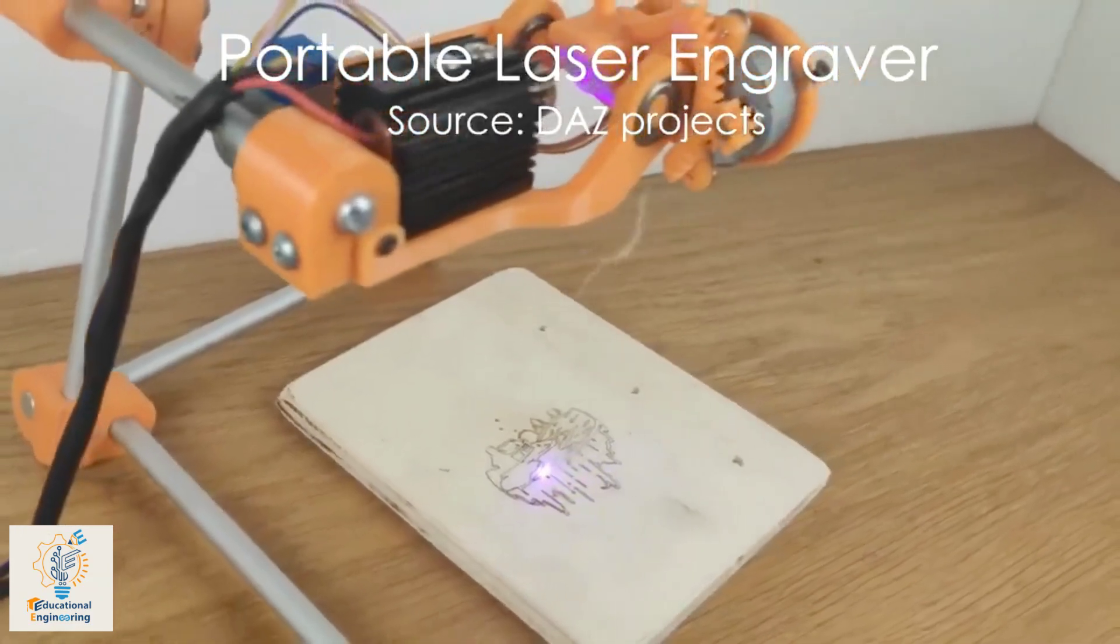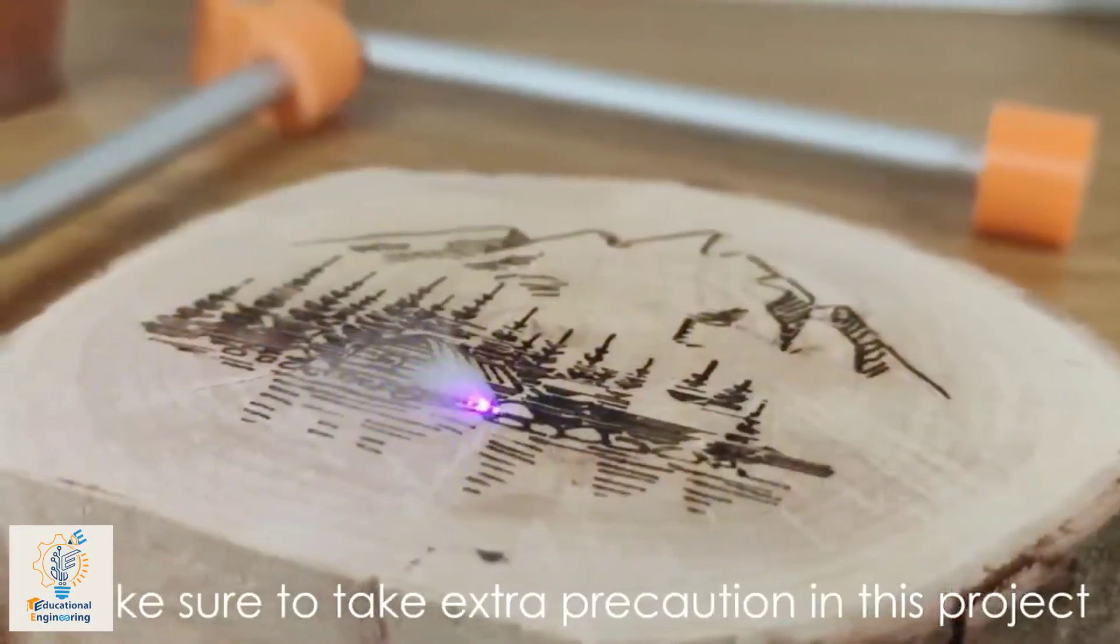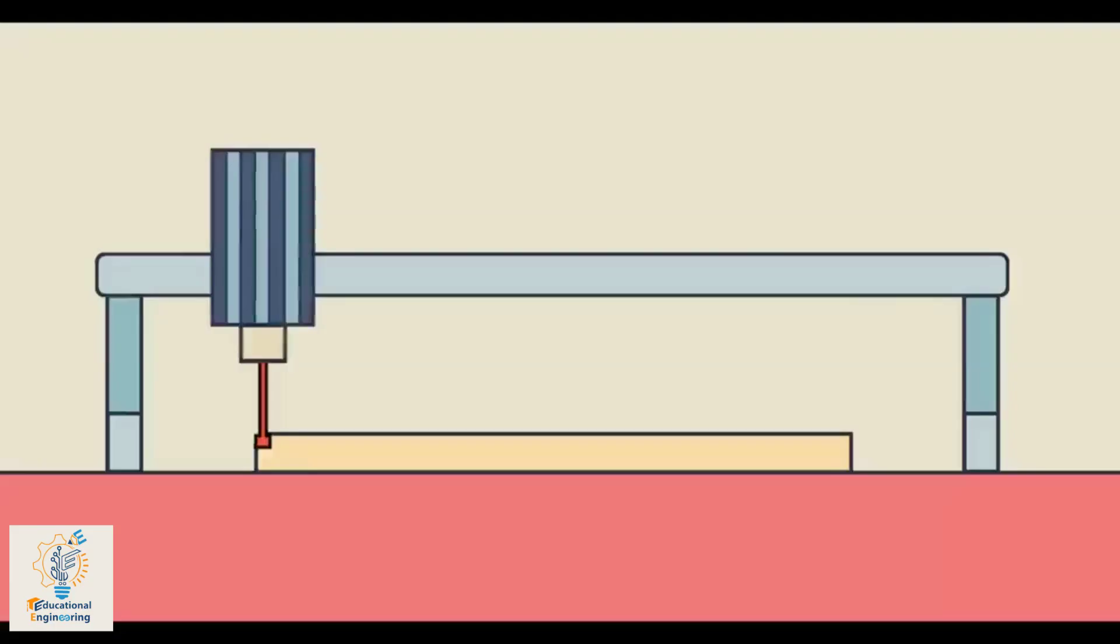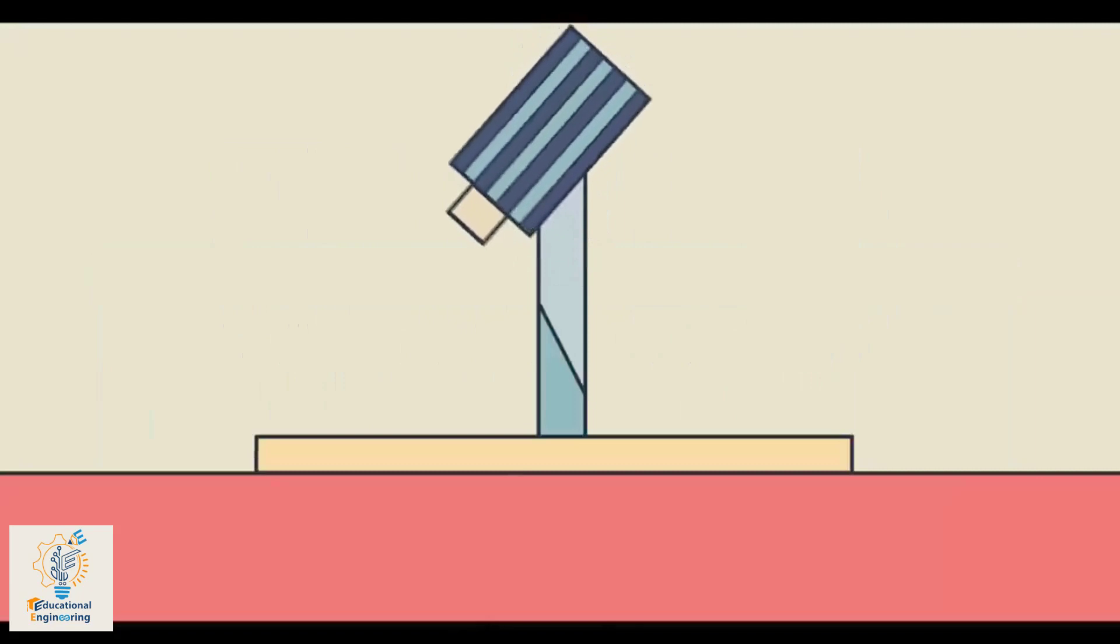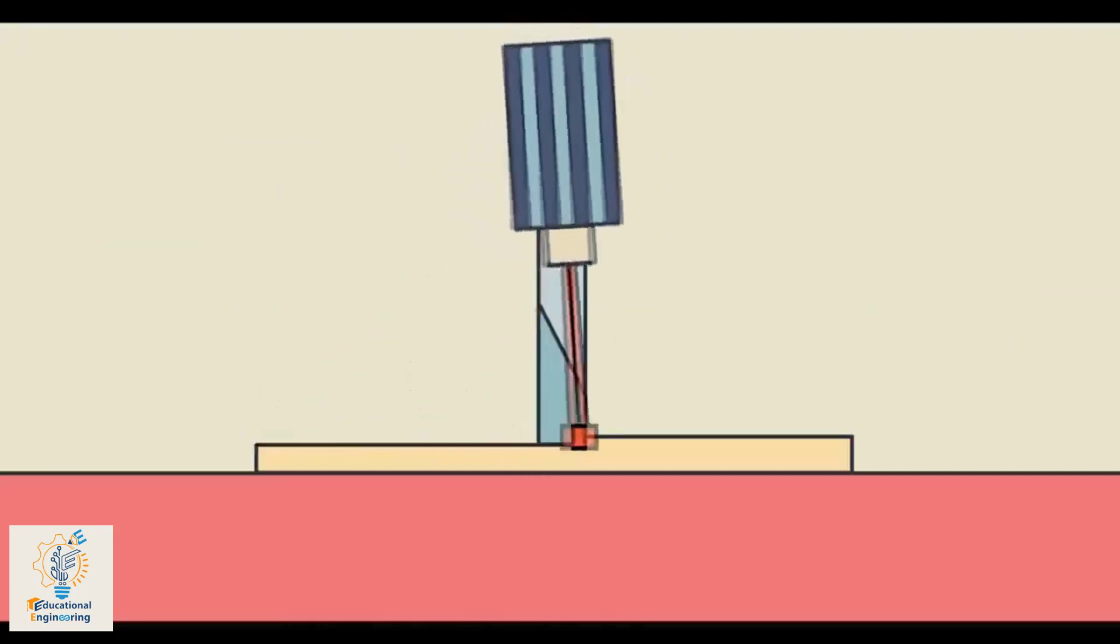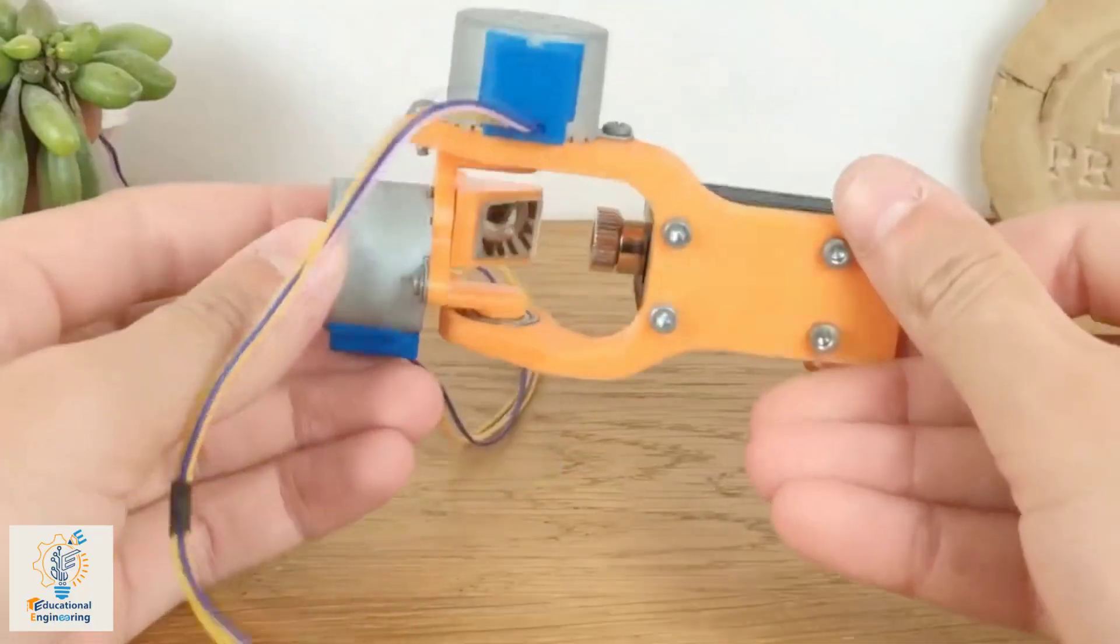This pocket-sized laser is built mostly of 3D printed parts, and is controlled via Bluetooth. Instead of using a linear axis, this project uses a rotational axis to rotate the laser.